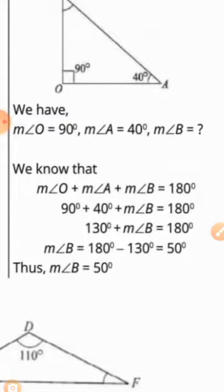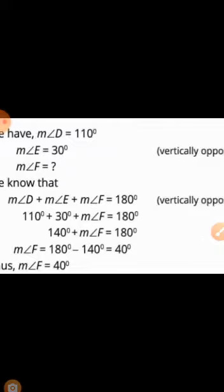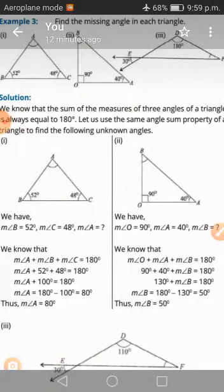Angle O = 90 degrees اور angle A = 40 degrees ہے، B missing ہے۔ We know that all three angles sum equals 180 degrees. O کی value 90 اور A کی 40 put کریں، دونوں کو add کریں تو 130 آتا ہے۔ B missing ہے تو 180 minus 130 equals 50 degrees۔ اسی طرح angle D = 110 اور E = 30، دونوں کو add کریں تو 140، اور angle F = 180 minus 140 = 40 degrees۔